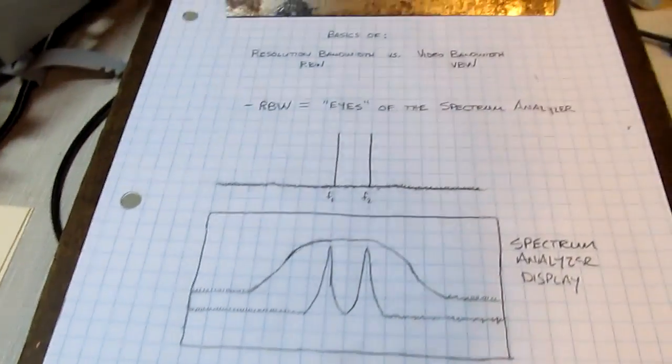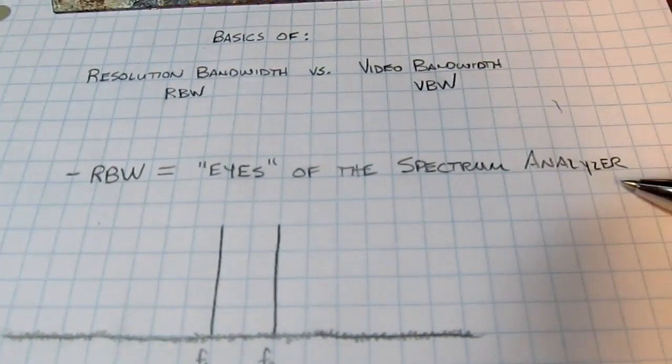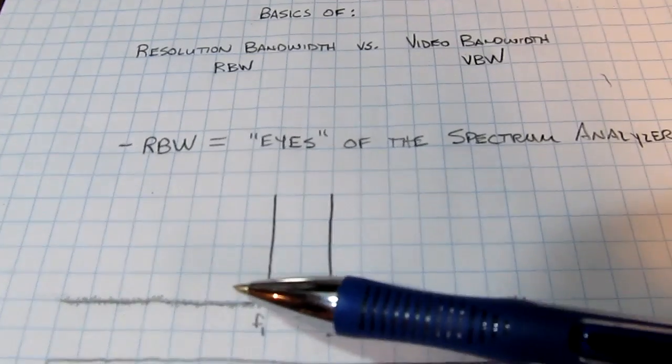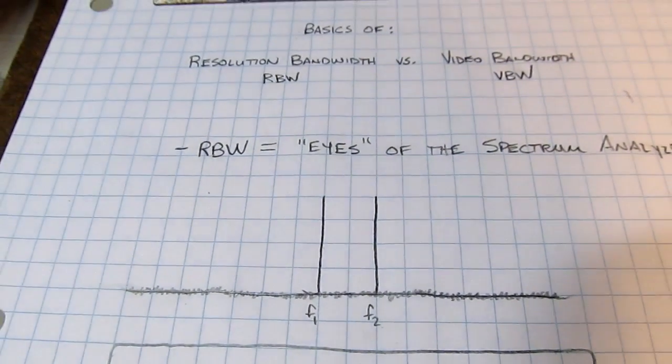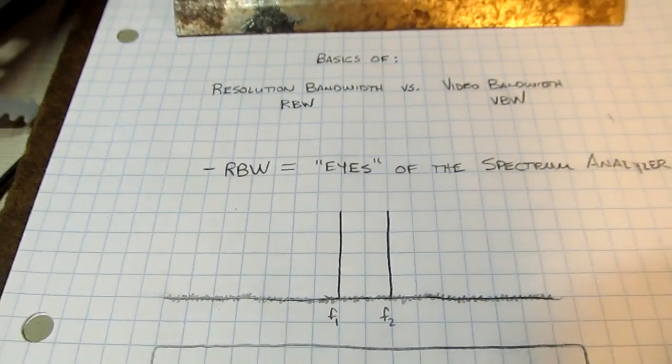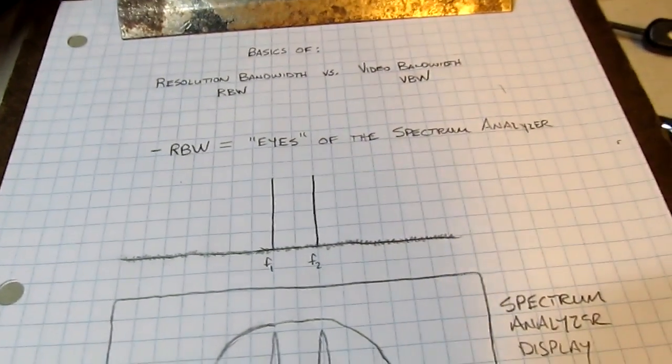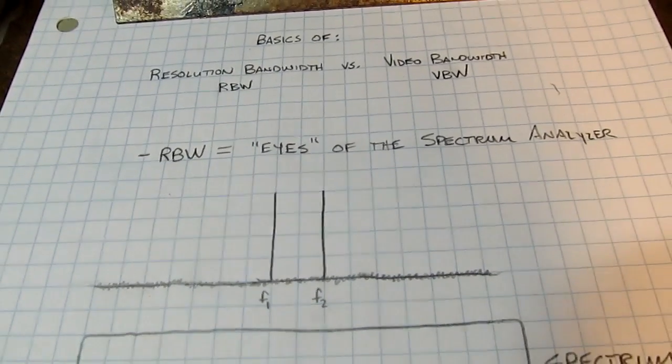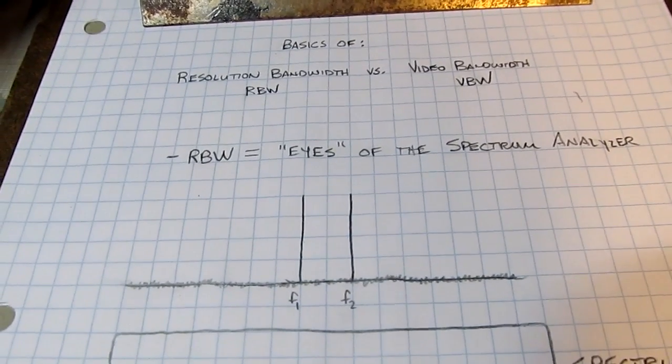A friend of mine once described the resolution bandwidth as the eyes of the spectrum analyzer. It lets you control what portion of the spectrum the spectrum analyzer is seeing. I've got a little system here to show you what I mean. Let's say I've got an actual RF environment where there are two signals here at F1 and F2.